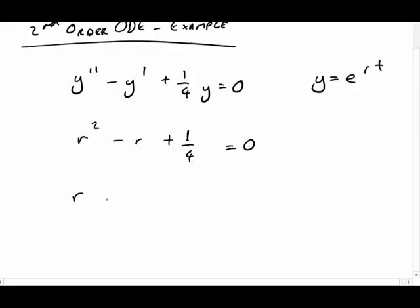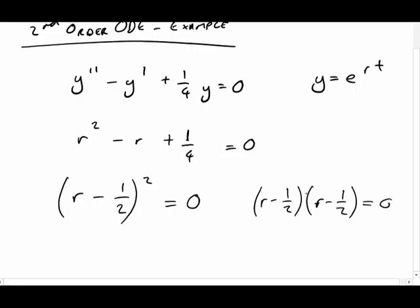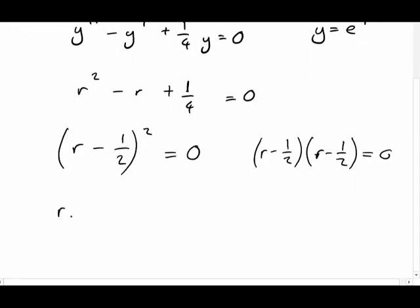Now basically, we just try and solve this quadratic. You can fiddle with it, you can use the quadratic formula, you can do it however you want. But basically, it goes to r minus a half squared, and that equals zero. In other words, r minus a half and r minus a half. You can verify that either by expanding it out, or you can try and use the quadratic formula to come up with it yourself.